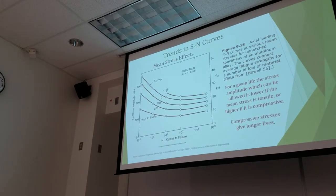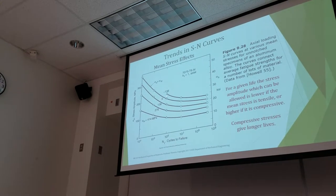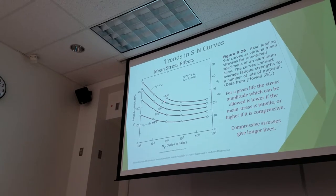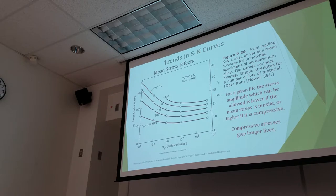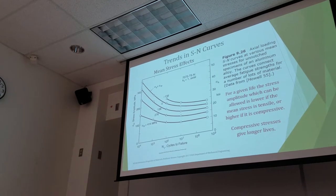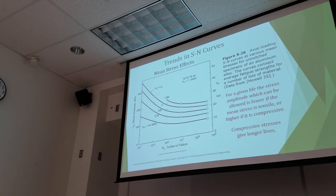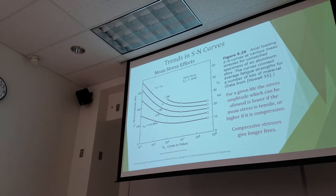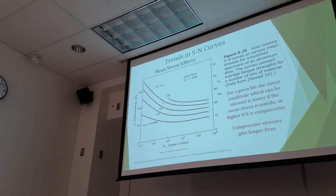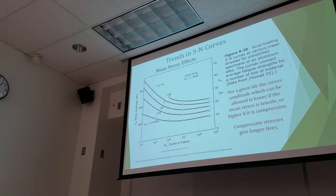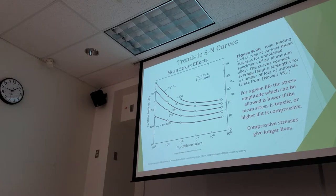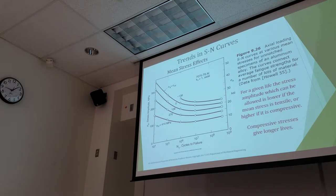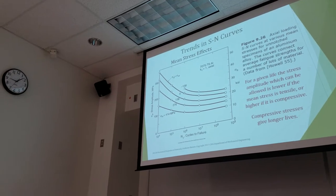It's also interesting to note that compressive mean stress actually extends the life — it gives you some credit. But in your design, if you have a compressive mean stress, it's easier to just use the fully reversed effect and don't take the credit. You have a more conservative approach so your safety factor gets bigger. So most of the time you don't even look at that credit for your compressive mean stress.